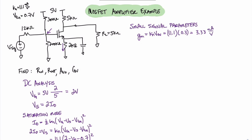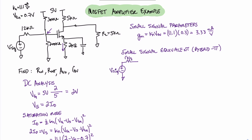Now that we have our small signal parameter, let's create our small signal equivalent circuit using the hybrid pi model. The hybrid pi model is appropriate here because the source is bypassed with a bypass capacitor, and therefore in the AC equivalent circuit the source will be grounded. When it's grounded, the hybrid pi model is easier to use from a circuit analysis perspective. Writing out the small signal equivalent circuit, we start on the left with our voltage signal and our 12 kilohm signal resistance. The 12 kilohm signal resistance is attached at the gate, and we have the 300 kilohm and 200 kilohm biasing resistors, which are in parallel after shorting DC voltages to ground.